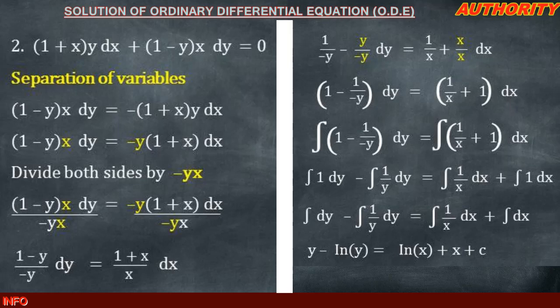Making y the subject, we take −ln|y| to the other side, giving y = ln|x| + ln|y| + x + C. So the solution to the ordinary differential equation (1 + x)y dx + (1 − y)x dy = 0 is y = ln|x| + ln|y| + x + C. Thank you very much for watching. If you are new to this YouTube channel, please subscribe, like, and share our videos. Let's take more examples as we all learn together.